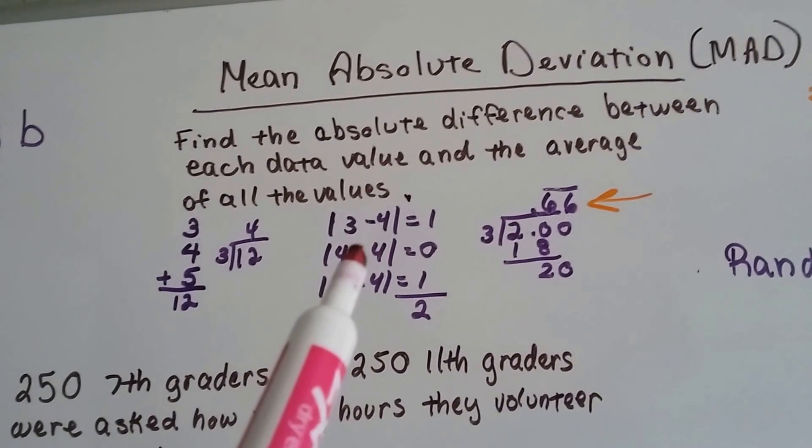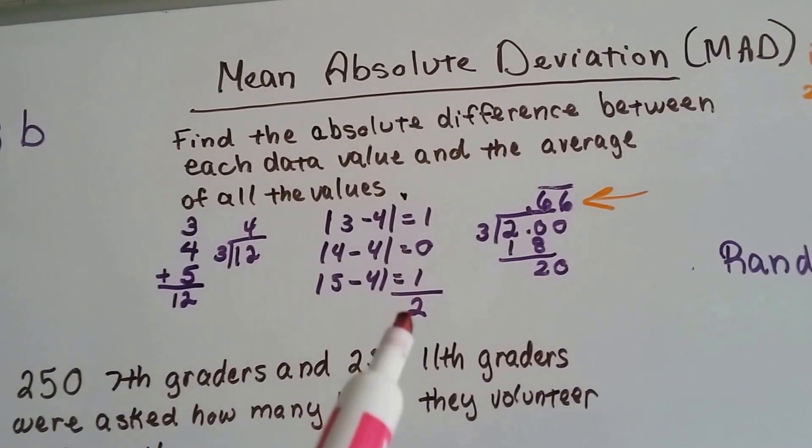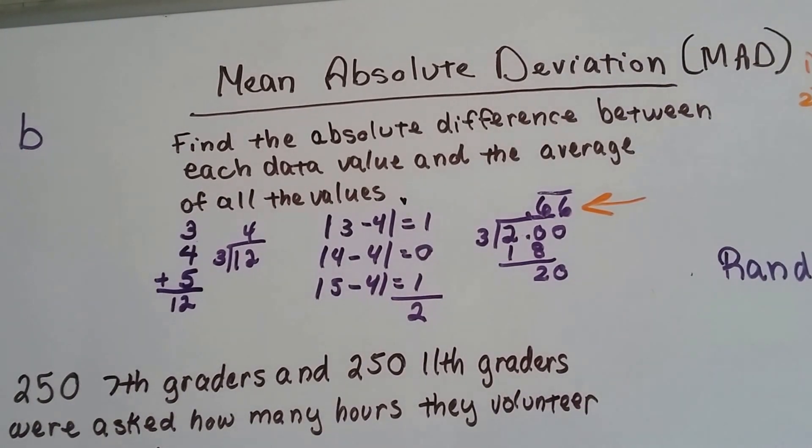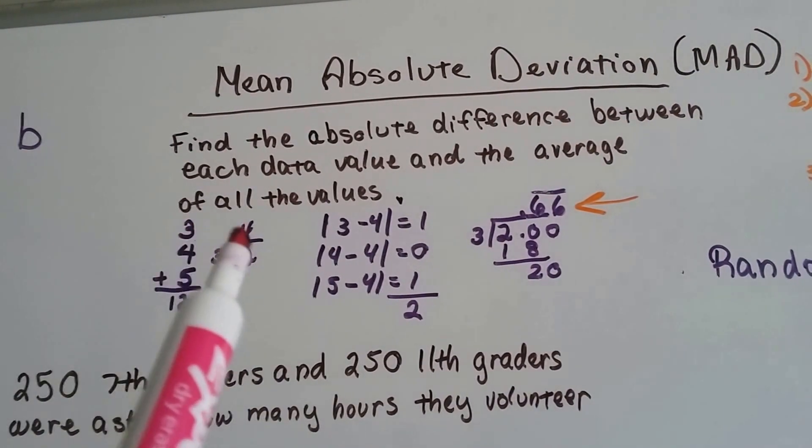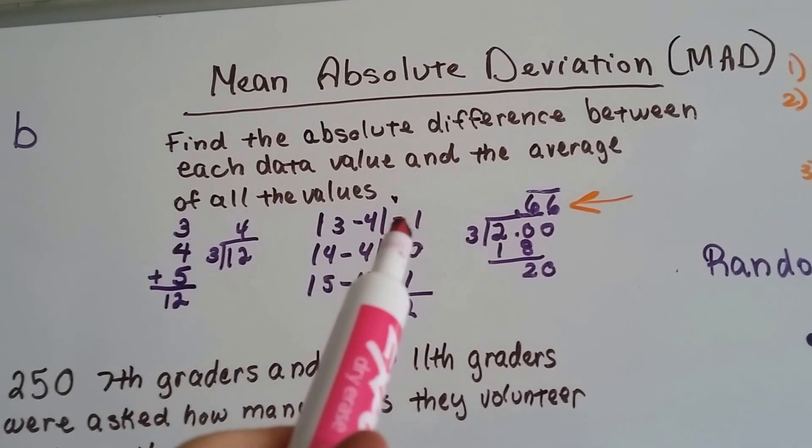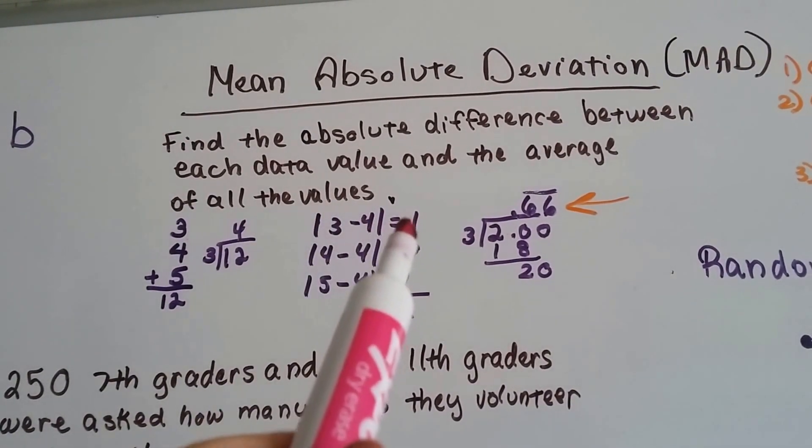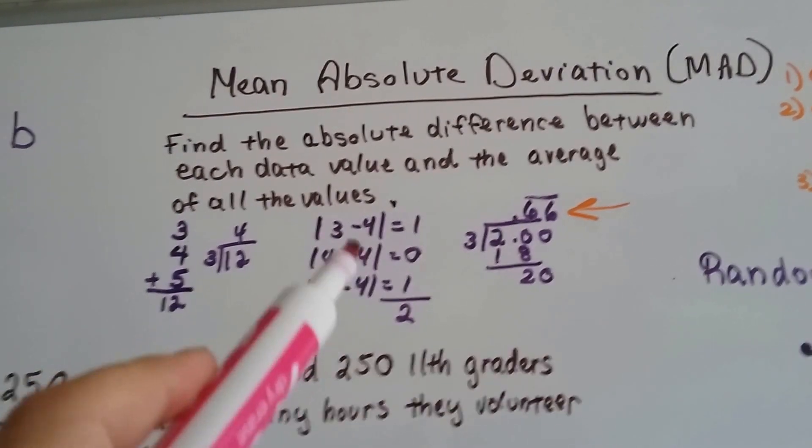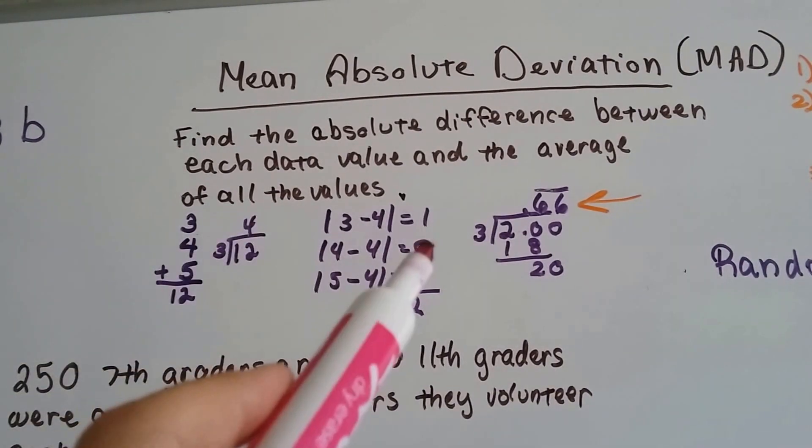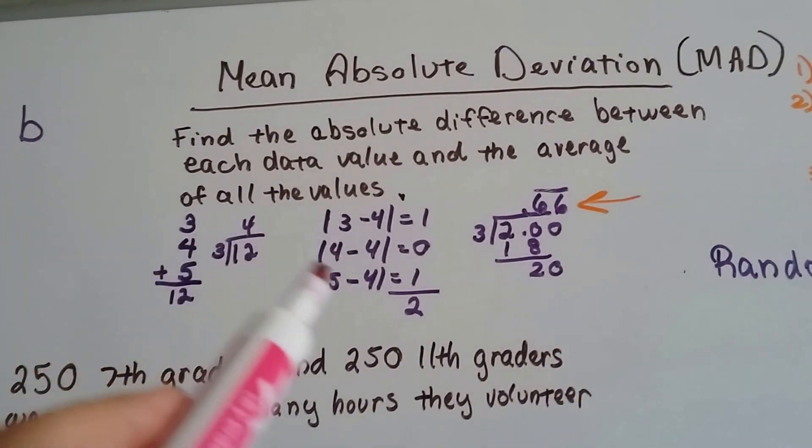Now we get the absolute difference. Remember what absolute value is? It doesn't matter if it's positive or negative, it's just how far away it is from 0. So we do 3 take away 4, and we get 1. Now if it wasn't absolute value, that would be a negative 1, wouldn't it? Because we're taking 4 away from 3 and going below 0. But this is absolute value, so the difference is 1. The difference between 4 and 4 is 0, and the difference between 5 and 4 is 1.